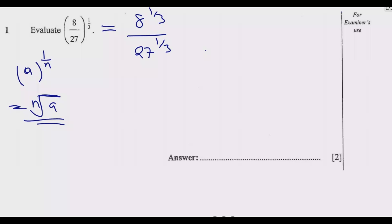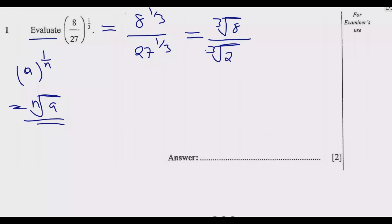Remember, when it says 'evaluate,' it's implying: complete, finish, simplify — make it in the simplest form. Based on this, since anything to the power 1/N is the same as the Nth root, this tells me we have the cube root of 8 over the cube root of 27.